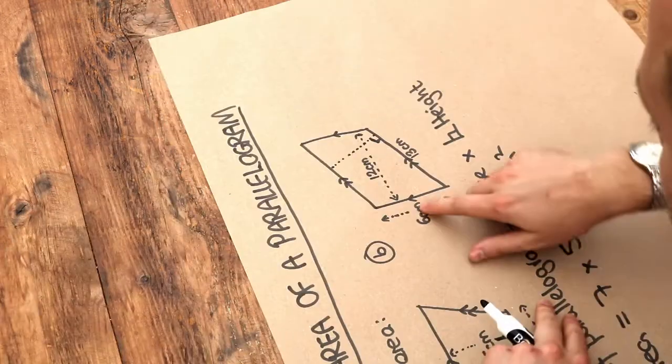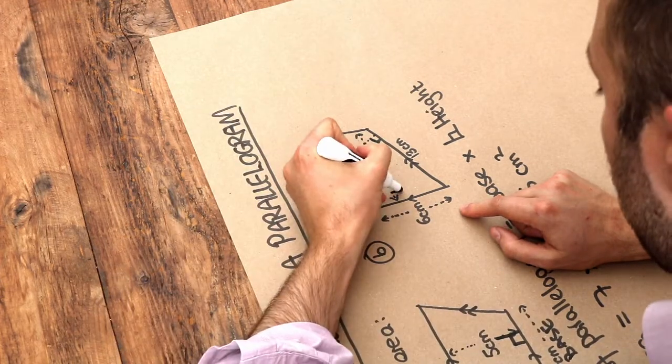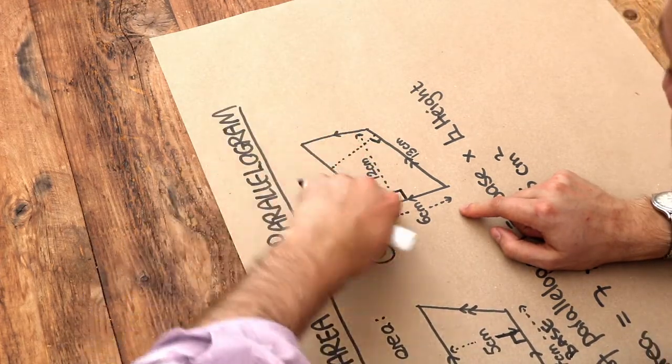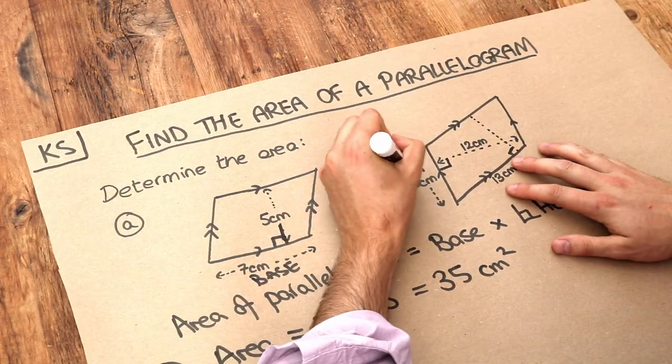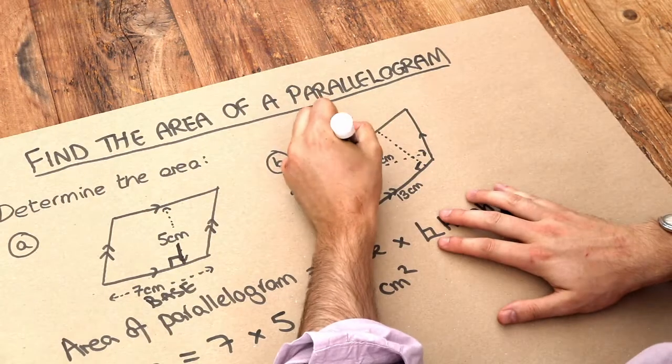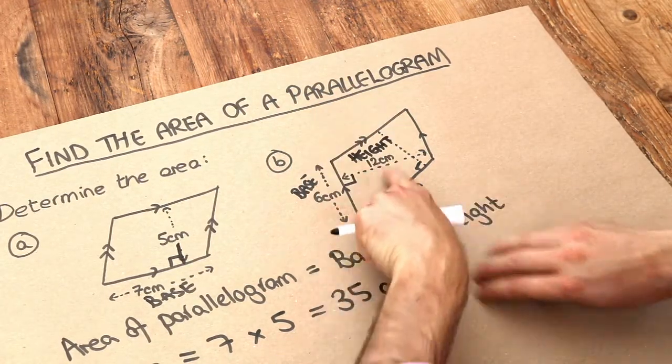Let's instead, if we rotate this paper, let's use this as the base, because then look, we do have this height at right angles to that base. So we're going to make this the base. That will then be the perpendicular height. And it means we want to use the 6 and the 12.